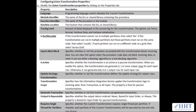The Inputs Must Block property specifies whether or not the procedure associated with the transformation blocks incoming data. You can clear this option when the procedure code does not block incoming data or when it can use either a blocking or non-blocking algorithm. The Is Active property specifies whether this transformation is an active or passive transformation — when enabled, the transformation can generate zero, one, or more output rows for each input row; otherwise, it generates only zero or one output row. The Update Strategy Transformation specifies whether this transformation defines the update strategy for output rows. Transformation Scope specifies how the integration service applies the transformation logic — Row, Transaction, or All Input.